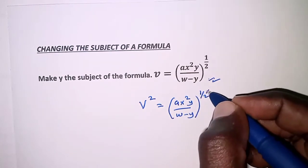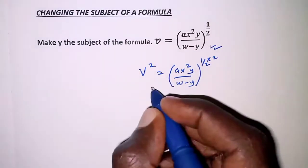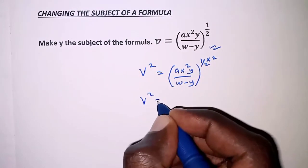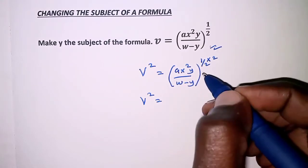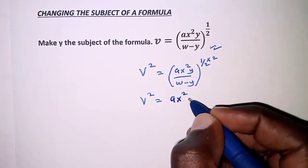...is equivalent to multiplying the power by 2. So what you're simply going to have for the left hand side is V squared is equal to, so a half by 2 is 1, so we'll therefore have ax squared Y over W minus Y.